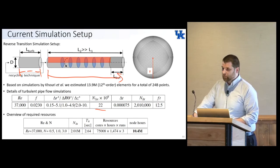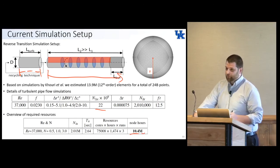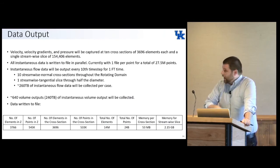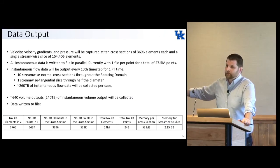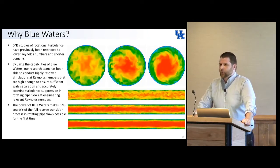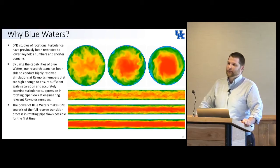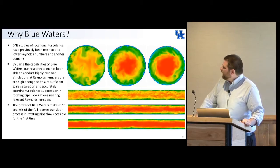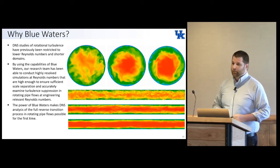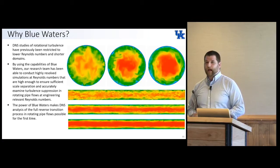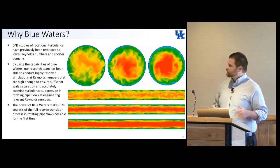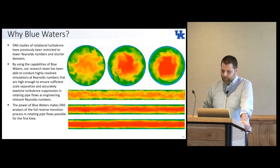This is an incredibly expensive simulation: 22 billion points, 2 million time steps, 10.4 million node hours on Blue Waters, with output on the order of hundreds of terabytes. That really already answers the question of why Blue Waters — we can't do this anywhere else. Blue Waters allows us to do studies we've already conducted that wouldn't have been possible in the past, and studies we're conducting now that some would say are impossible — developing turbulence DNS is something that's not typically done.